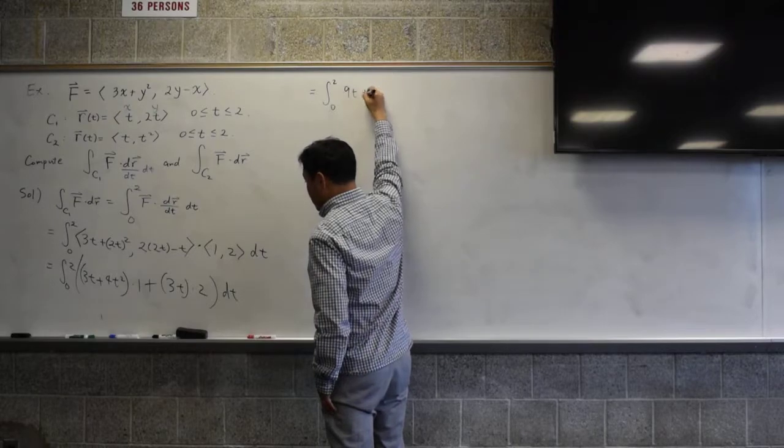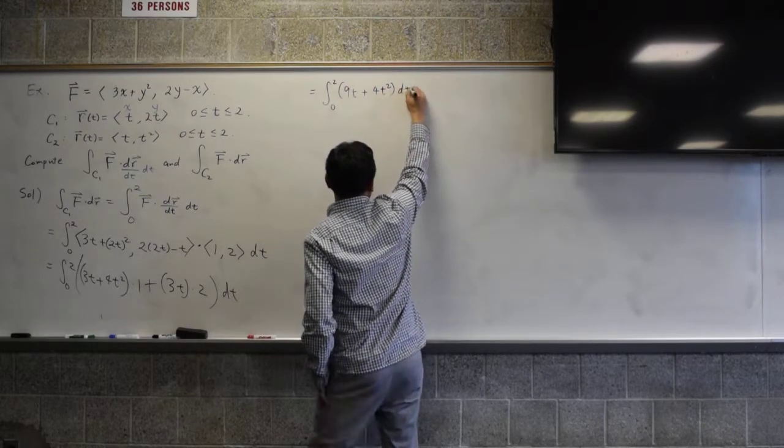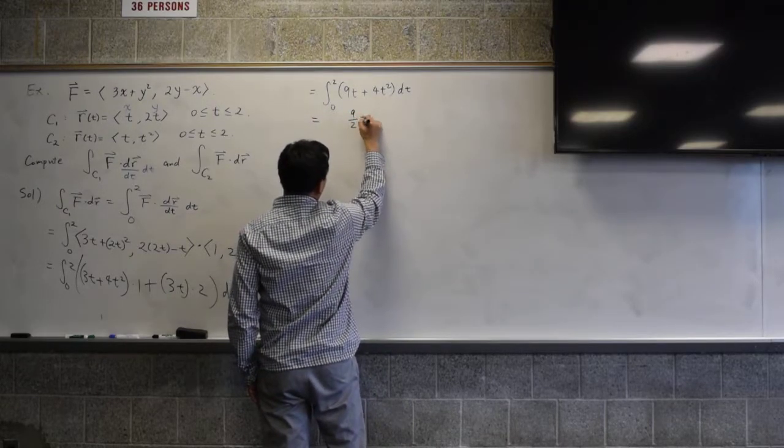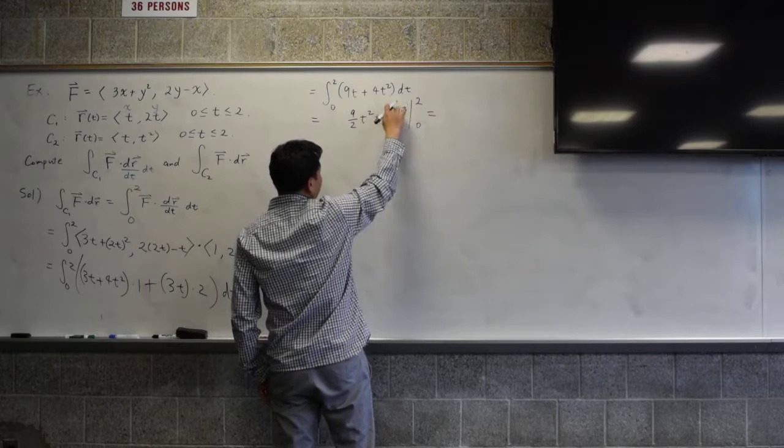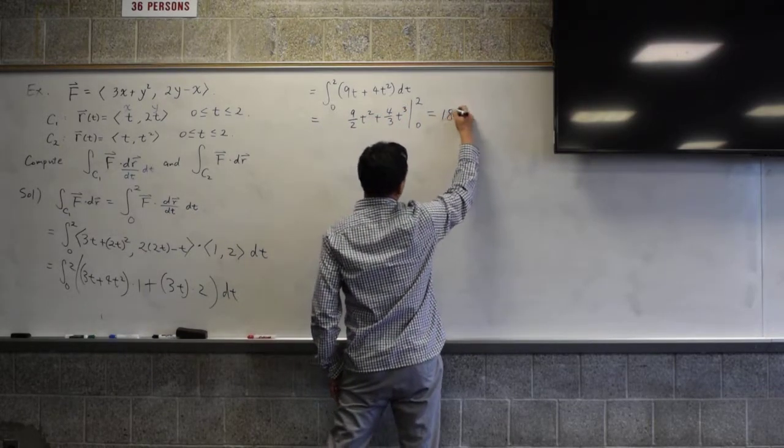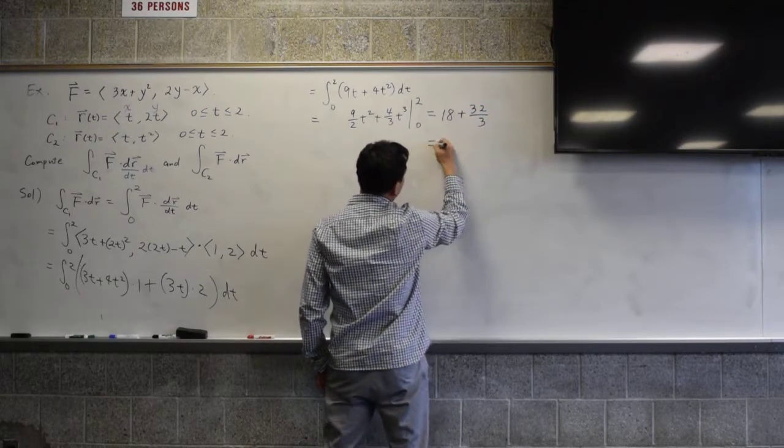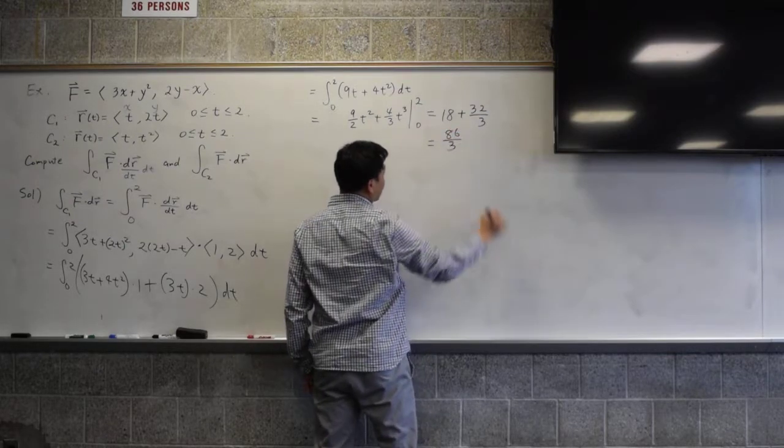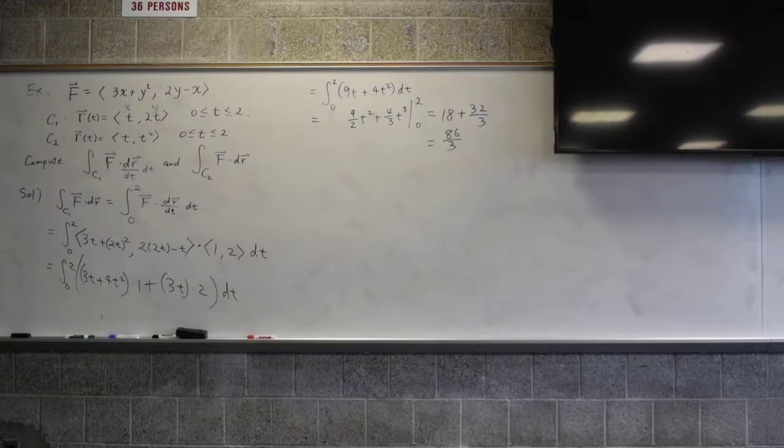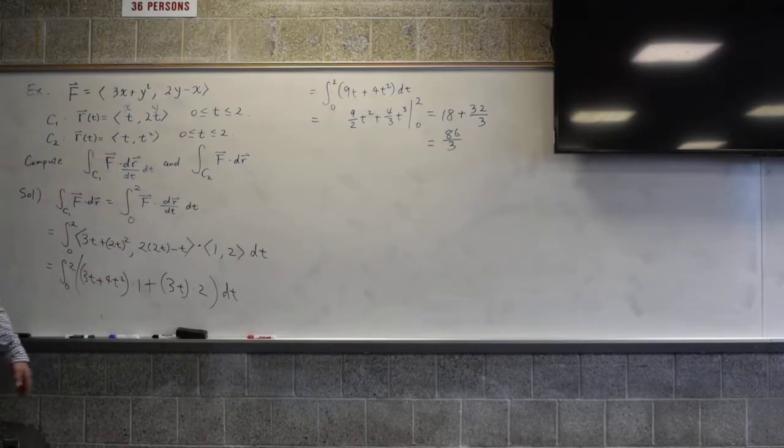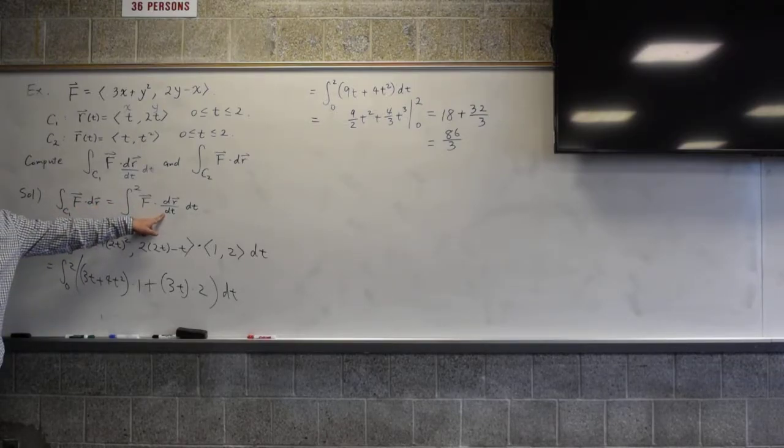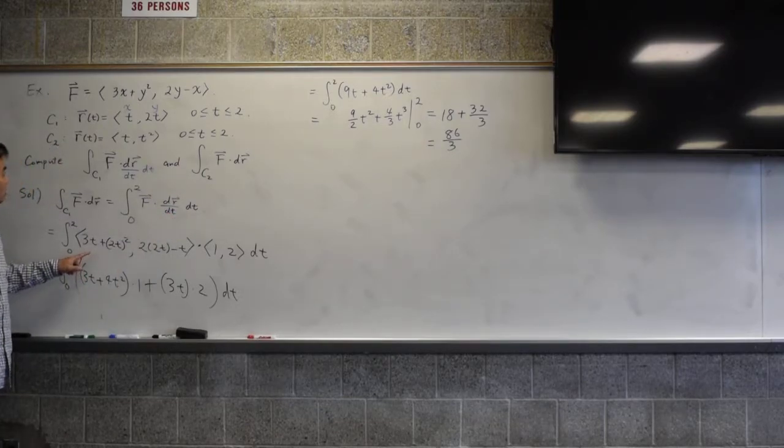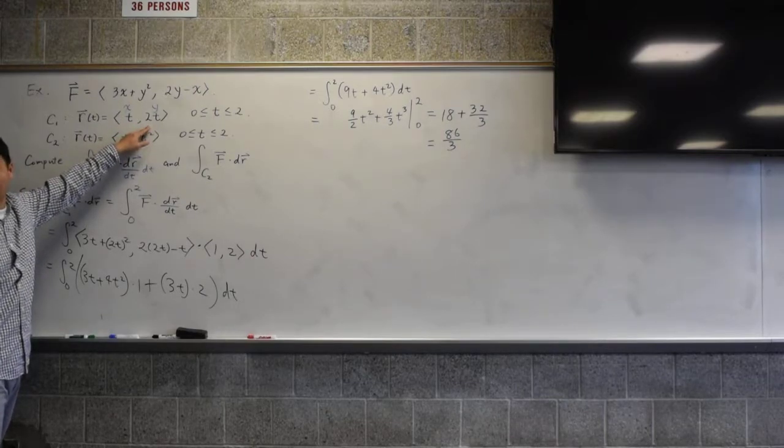Integrating 9t plus 4t² by t is 9/2 t² plus 4/3 t³. And you have to plug in 2 and 0. 2 to the third is 8, 8 times 4 is 32, so this is 18 plus 32/3, and that's 86/3. What's really important is to be able to know that you have to divide by dt, multiply by dt, and then into x and y, you should be plugging in your r(t).